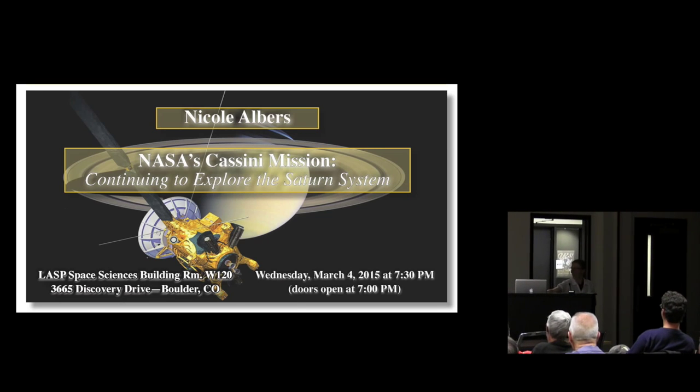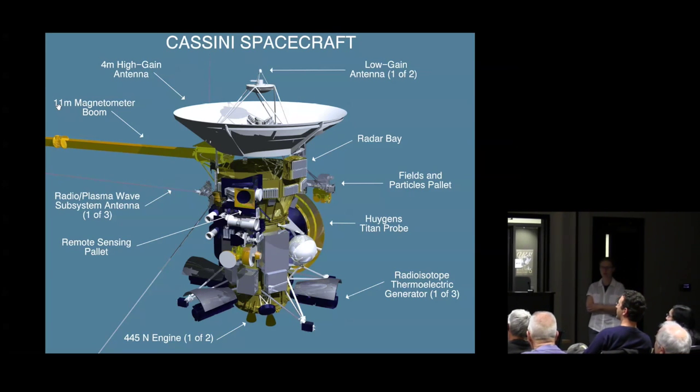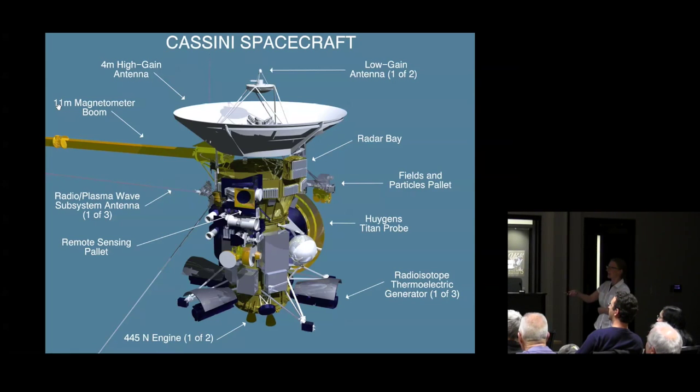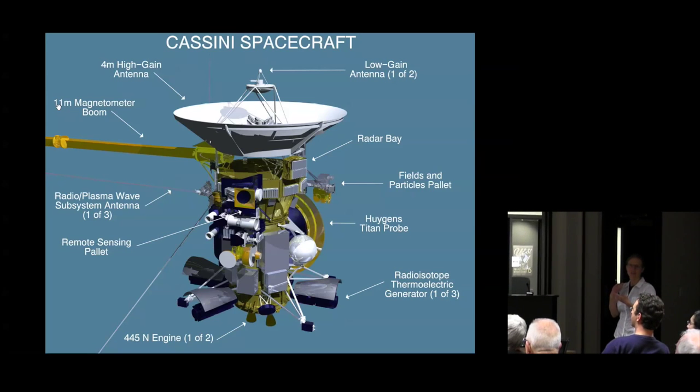Cassini is currently one of the active NASA missions in the outer solar system. The spacecraft shown here in a diagram has a wide range of different instruments. There's the remote sensing palette which carries UV, infrared, and visual imaging sciences.